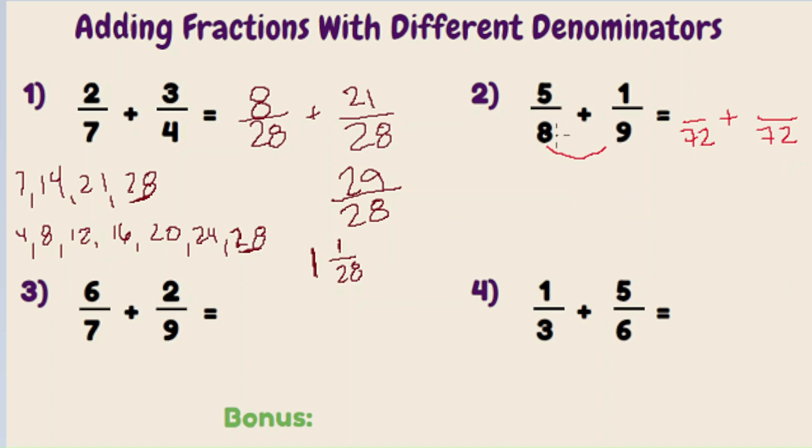And we're going to create equivalent fractions. Eight goes into seventy-two nine times. Nine times five is forty-five. Nine goes into seventy-two eight times. Eight times one is eight. If we add across, we get fifty-three over seventy-two.